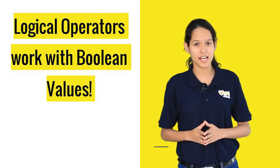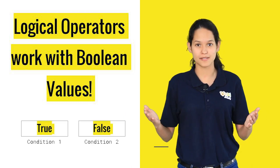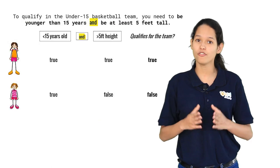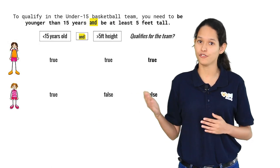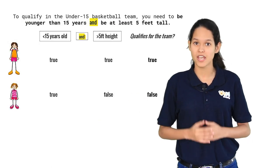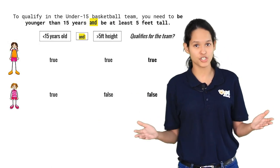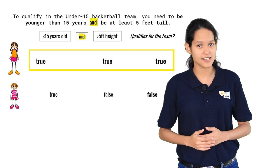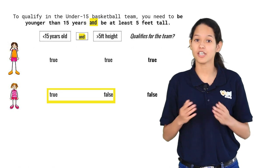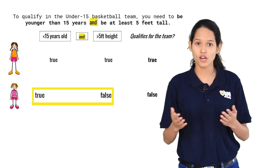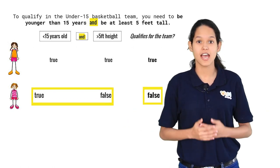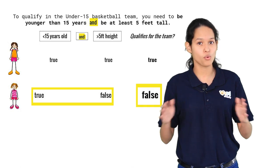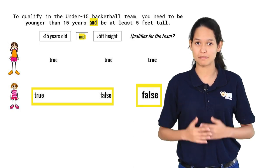Logical operators work with boolean values. Boolean values can either be true or false. In the example, to qualify for the under 15 team there are two conditions. Both have to be satisfied. If either one of the conditions is not satisfied, then the student does not qualify for the team.